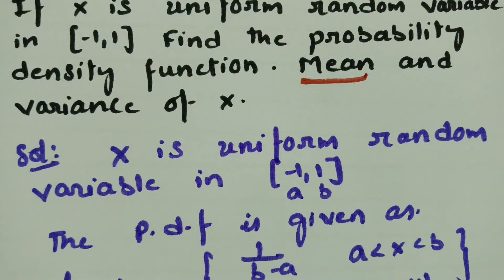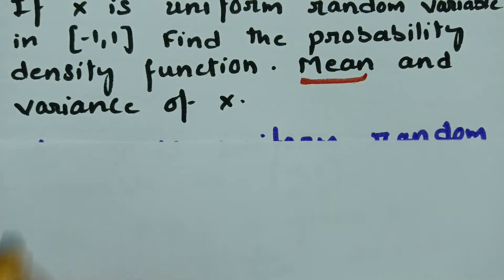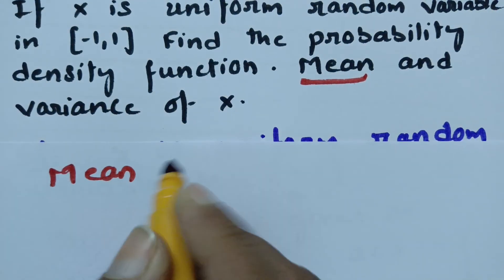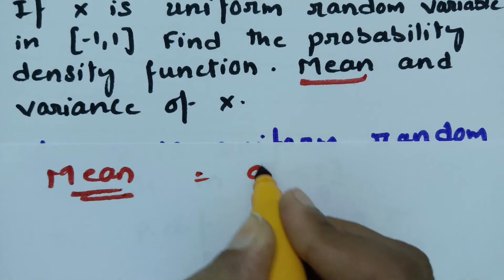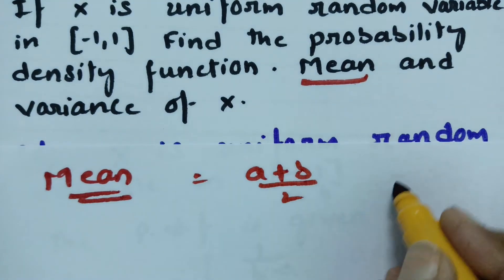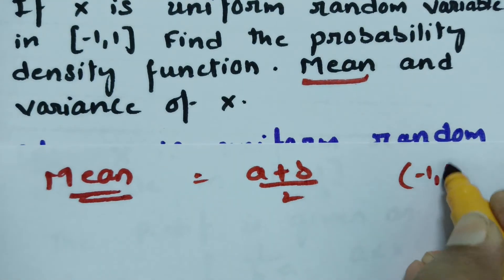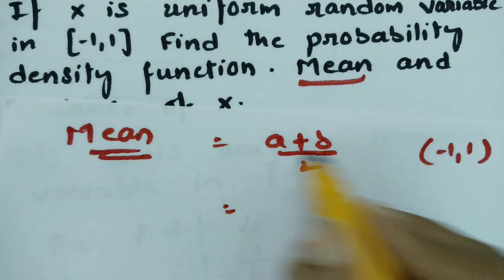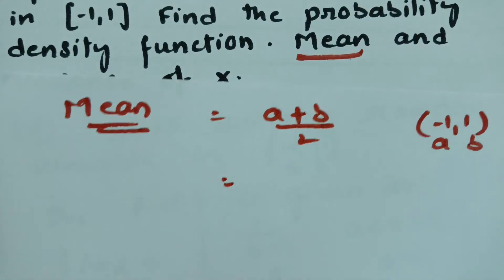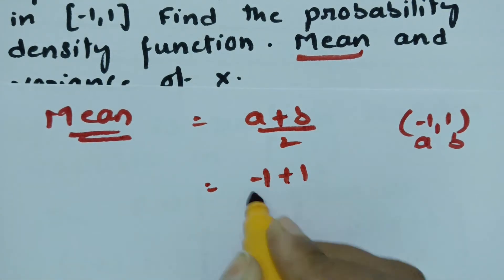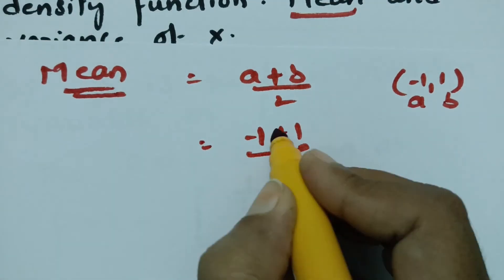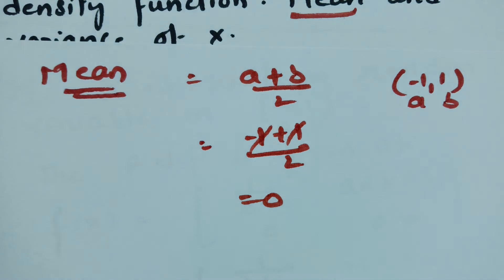Next we have to find the mean. The mean value is equal to a plus b by 2 — the formula for the mean of a uniform distribution is a plus b by 2. Here the interval is minus 1 and 1, so a is minus 1 and b is plus 1. This gives minus 1 plus 1 by 2, which equals 0. So the mean value is 0.